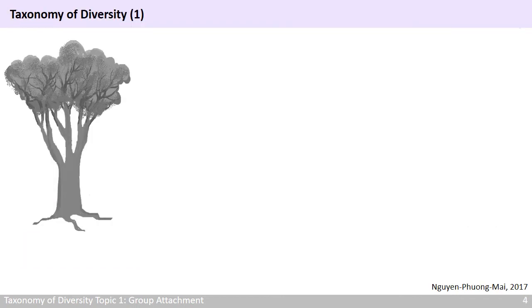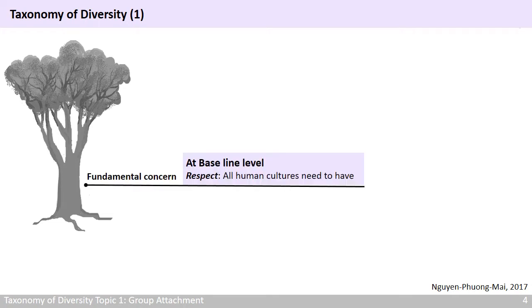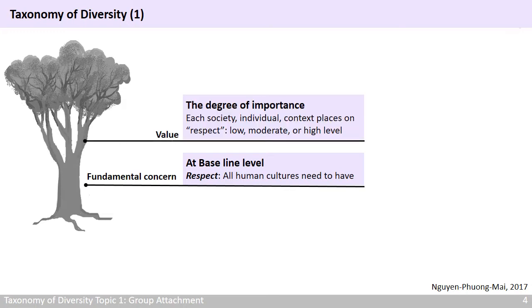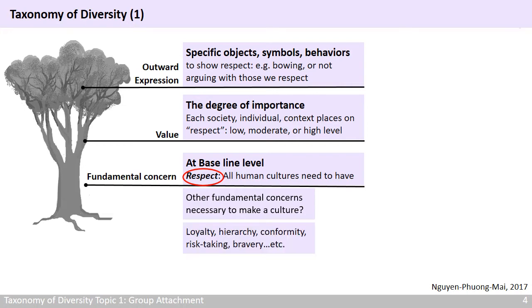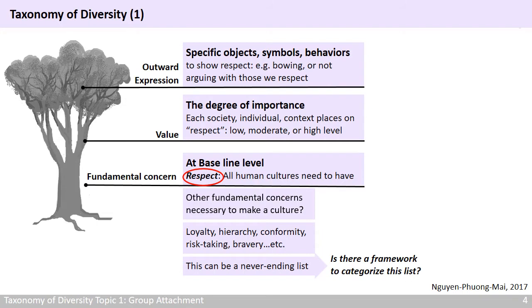In this tree of culture, let's start with one example. At the trunk, respect is a fundamental concern that all human cultures need. At the branches, each society, individual, or specific context may place the importance of respect at a low, moderate, or high level. At the canopy, outward expressions mean we can have many specific ways to show respect, such as bowing or not arguing with those we respect. If asked to list other fundamental concerns, you might list things such as loyalty, hierarchy, conformity, risk-taking, bravery, and many more. However, this can be a never-ending list, so surely there must be a framework to categorize it and make it short enough to comprehend.